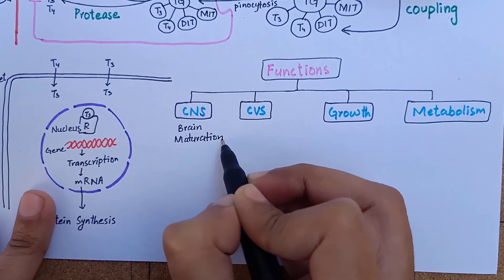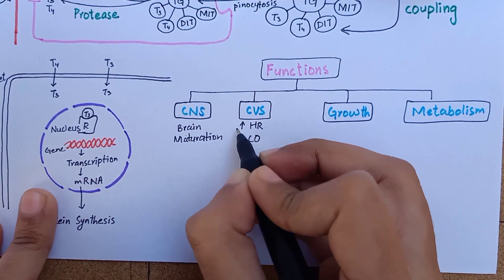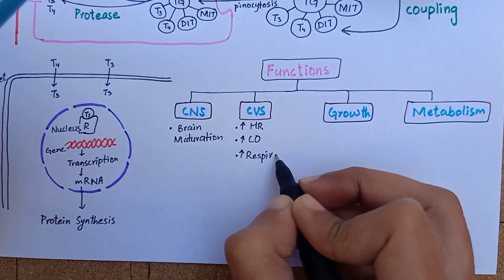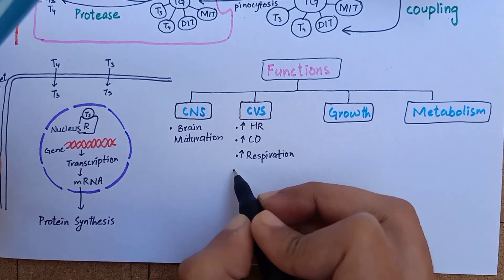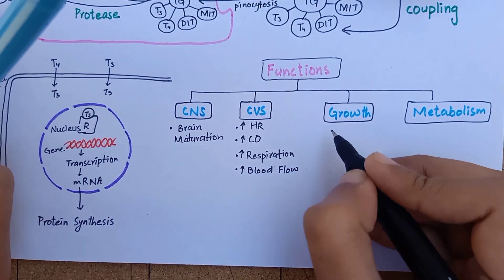In the cardiovascular system, it causes increased heart rate, increased cardiac output, increasing the rate of respiration and increasing tissue blood flow. It also causes bone growth.